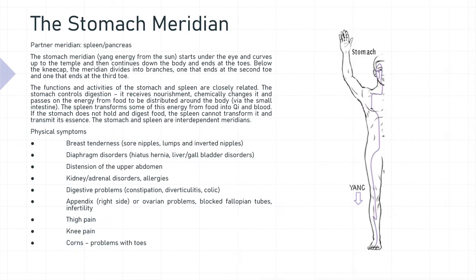The partner meridian for the stomach is the spleen and pancreas. The stomach meridian — yang energy from the sun — starts under the eye and curves up to the temple, then continues down the body and ends at the toes. Below the kneecap, the meridian divides into branches: one that ends at the second toe and one that ends at the third toe. The stomach controls digestion — it receives nourishment, chemically changes it, and passes on the energy from food to be distributed around the body by way of the small intestine. The spleen transforms some of this energy from food into Qi and blood. If the stomach does not hold and digest food, the spleen cannot transform it and transmit its essence. The stomach and spleen are interdependent meridians.